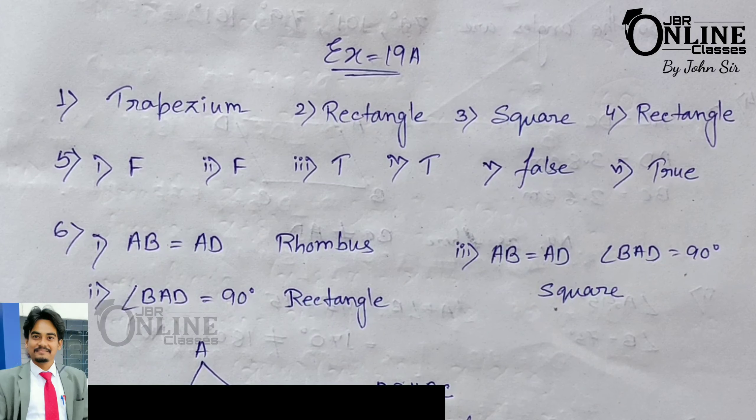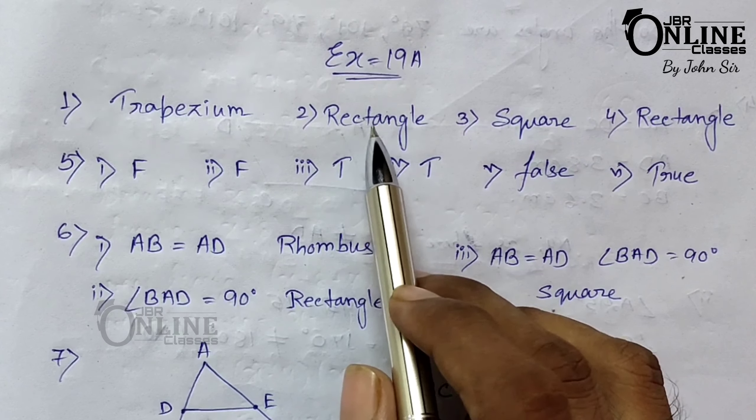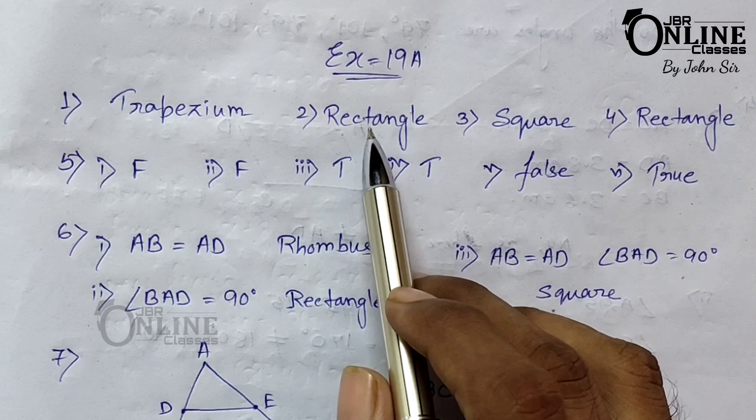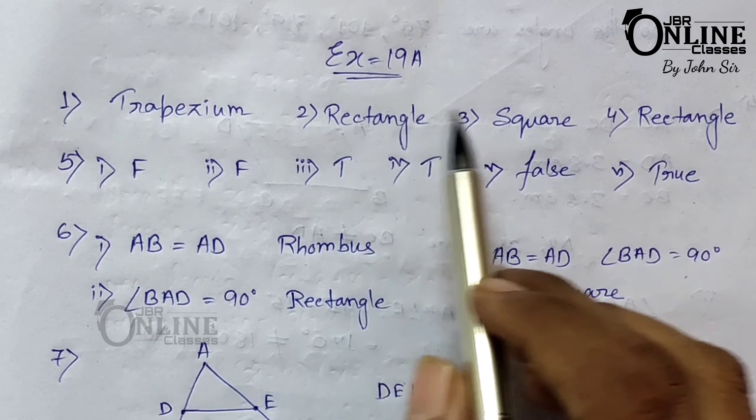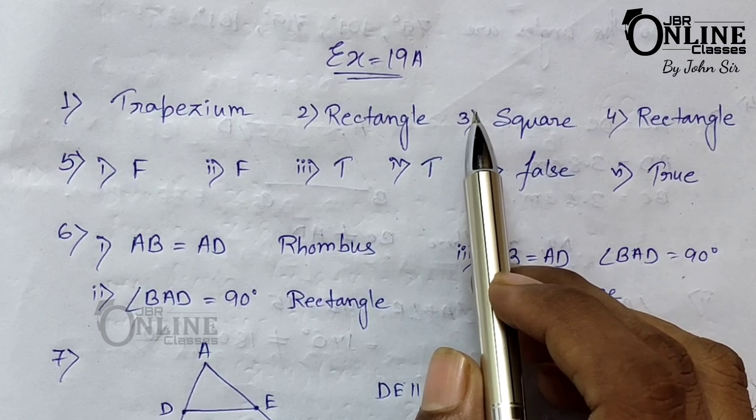Number two: what would you call a figure having four sides where the opposite sides are parallel and the angles at the corners are right angles? In a rectangle, the opposite sides are parallel and each and every angle is equal to 90 degrees.